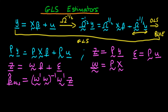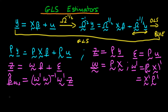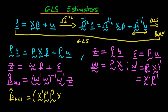We can substitute in the explicit forms for Ω̃ and z to get the GLS estimator. We note that Ω̃' = (PX)' = X'P'. Substituting in, we have β̂_GLS = (X'P' · PX)^(-1) · X'P' · z, where z = P·y.